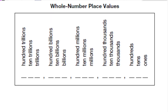Here we have our whole number place values, from the ones to the trillions. We go ones, tens, hundreds — we call these our units. Then we have thousands, ten thousands, hundred thousands — these are our thousands.